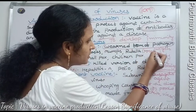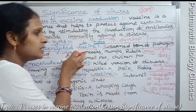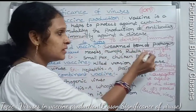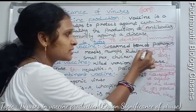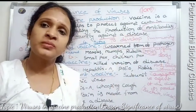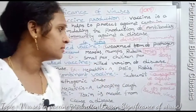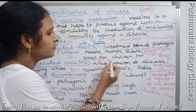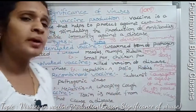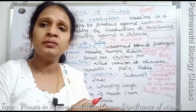These three diseases — measles, mumps, and rubella — are covered by a single vaccine called the MMR vaccine. Another example is smallpox and chickenpox, which show symptoms like rashes, fever, and headache.